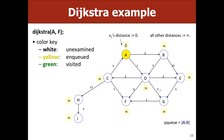Let's do an example trying to get from A to F. The coloring scheme: yellow means enqueued, white means we know nothing about the node, and green means visited and processed. We start by enqueuing only our start node A with cost zero.